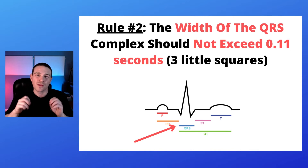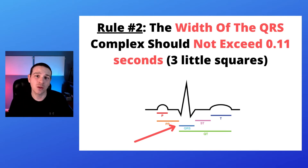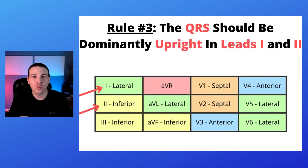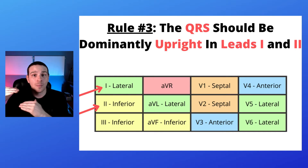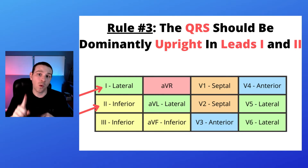Rule number two: the width of the QRS complex should not be any longer than 0.11 seconds, or three small squares. Rule number three: the QRS should be dominantly upright, which means more above the isoelectric line in leads one and leads two.